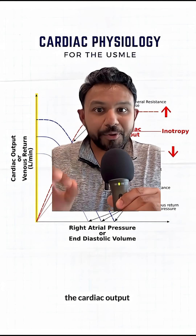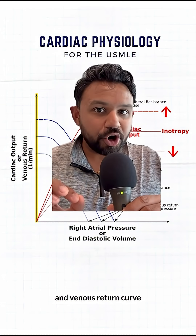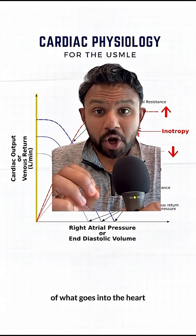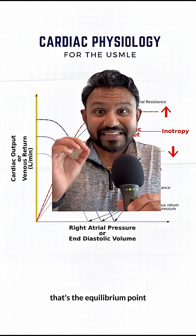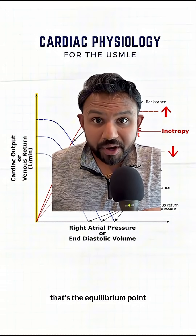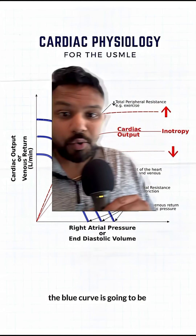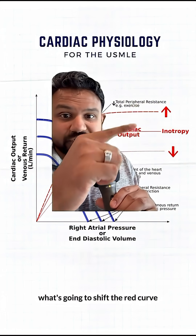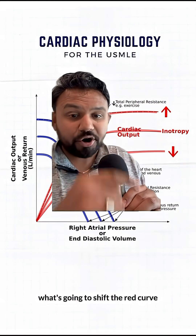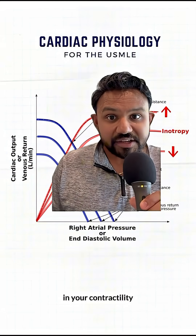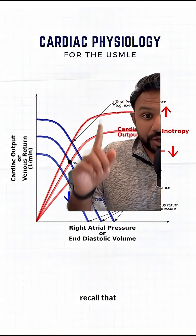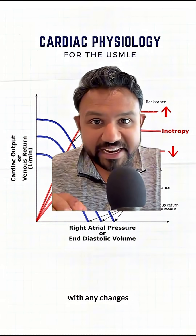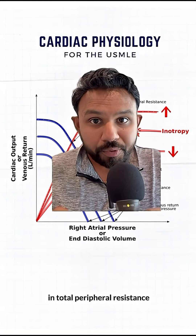Time for a quick summary. The cardiac output and venous return curve shows us the relationship of what goes into the heart and what must come out — that's the equilibrium point. What shifts the blue curve is adding or subtracting volume from the system, whereas what shifts the red curve is changes in contractility. Changes in total peripheral resistance will change your equilibrium point.